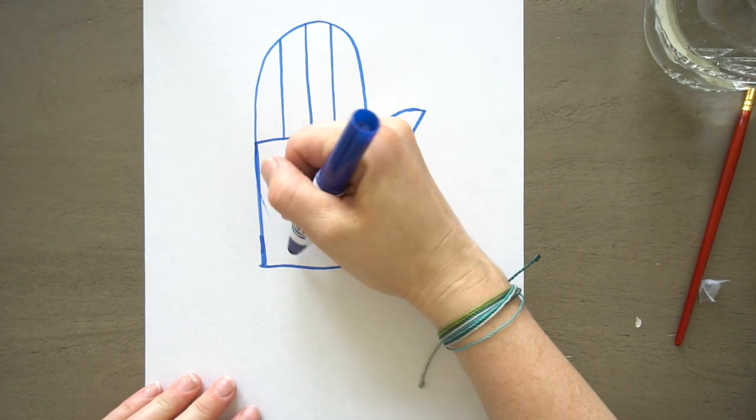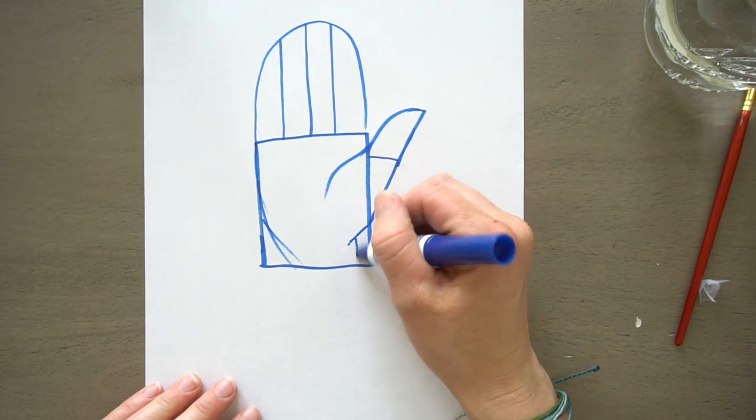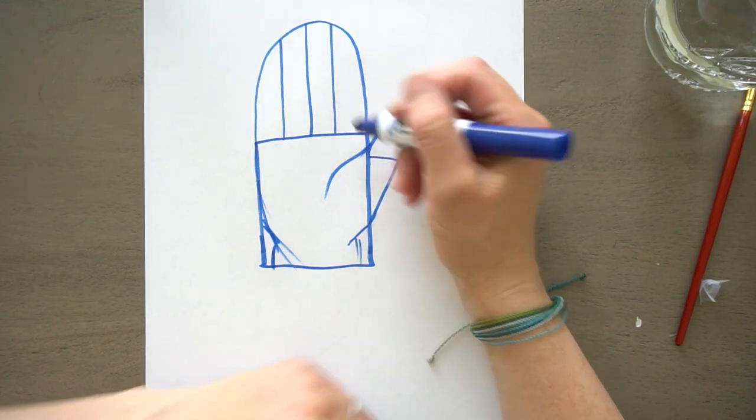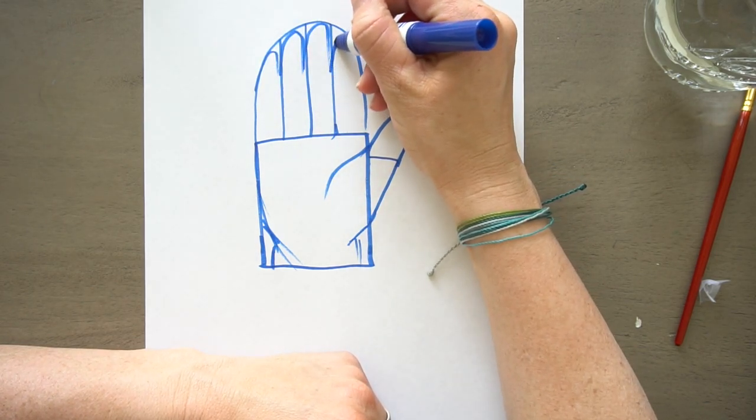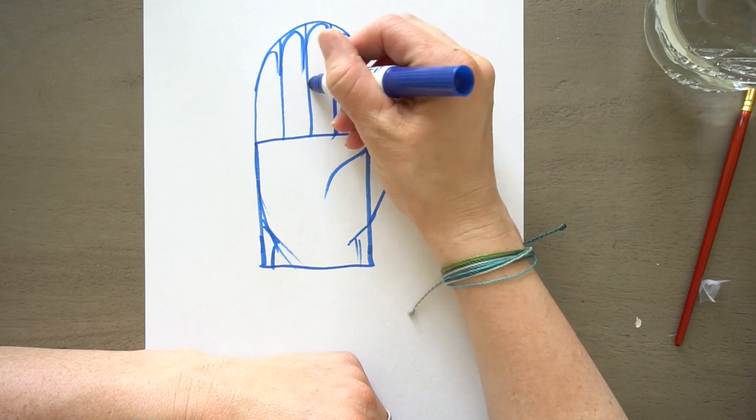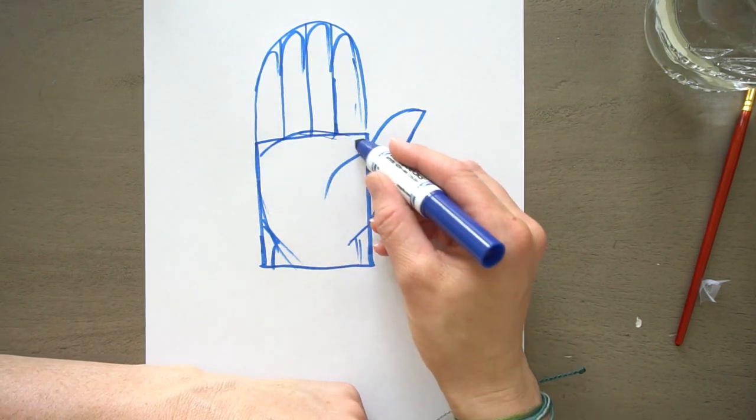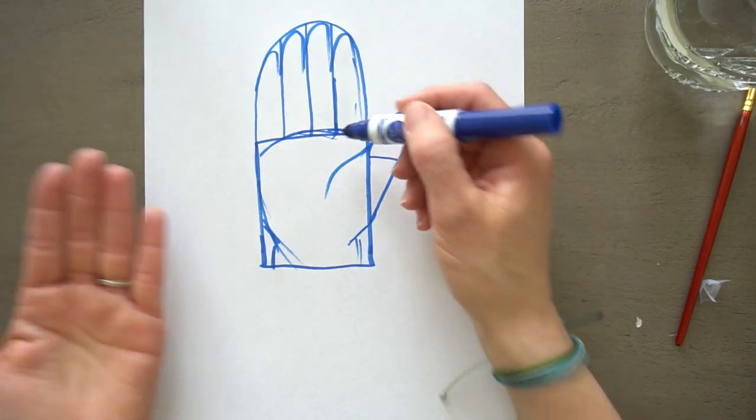And now we're going to make this into a hand. So let's kind of round it. And then your fingers would be in here. And this actually, in real life, is curved. A little, it actually is like this.